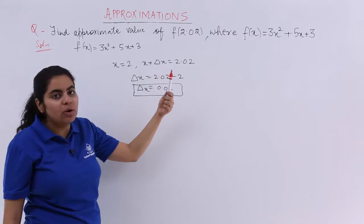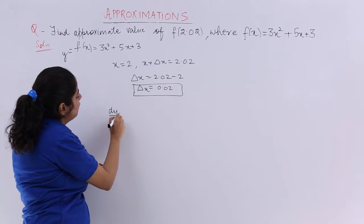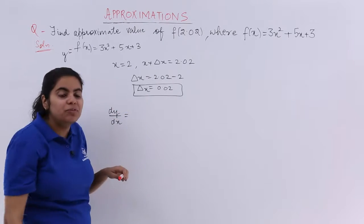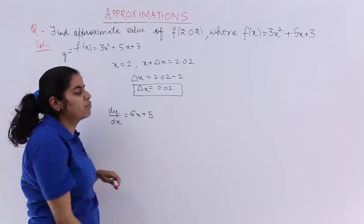Next is you have to find out dy/dx. So if this function is taken as y, what is my dy/dx? It is the differentiation of the above function with respect to x. So it is 6x + 5.